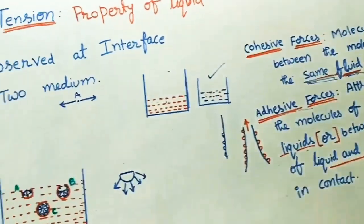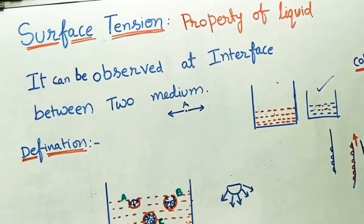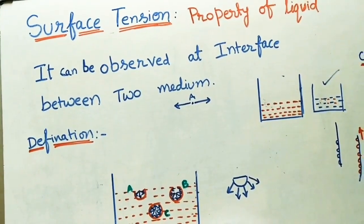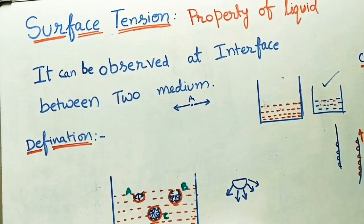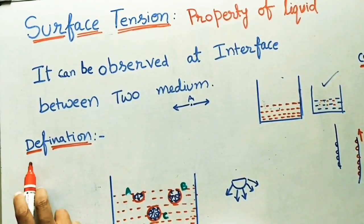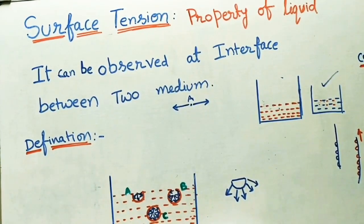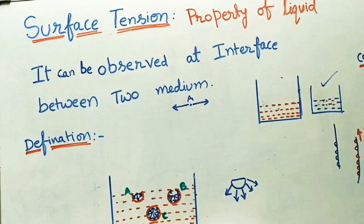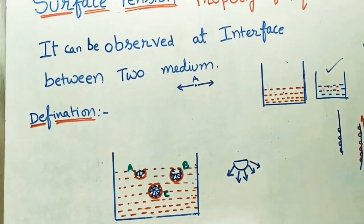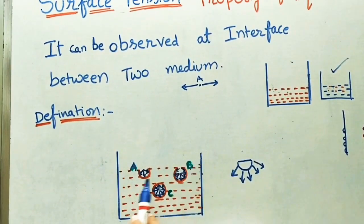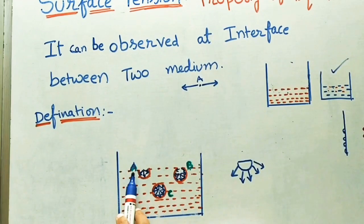In surface tension, I will explain how cohesive forces come in between molecules. Before taking the definition of surface tension, I will give one example. In a container, I am taking a liquid. In this liquid, I am taking molecules A, B, and C.